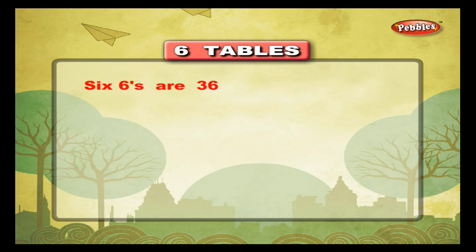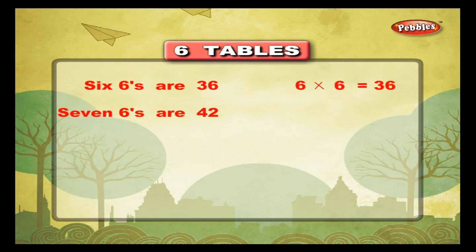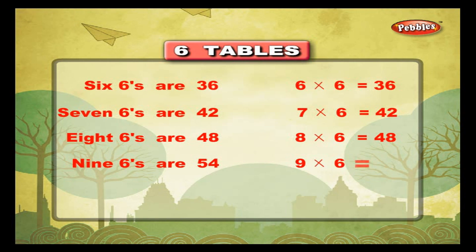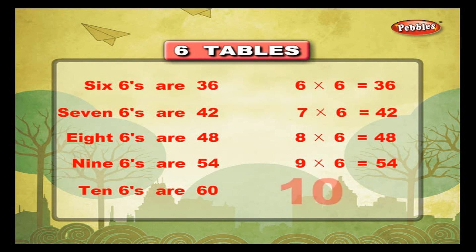6 sixes are 36, 6 into 6 is equal to 36. 7 sixes are 42, 7 into 6 is equal to 42. 8 sixes are 48, 8 into 6 is equal to 48. 9 sixes are 54, 9 into 6 is equal to 54. 10 sixes are 60, 10 into 6 is equal to 60. 7 tables.